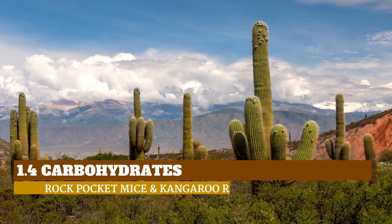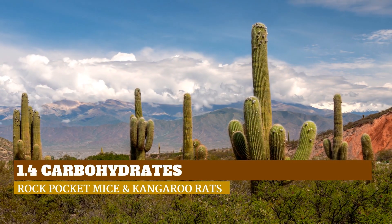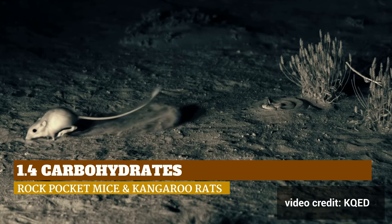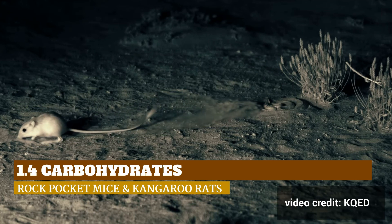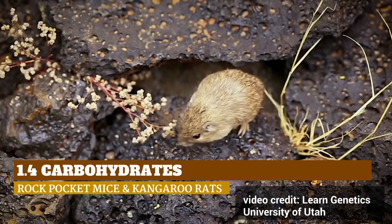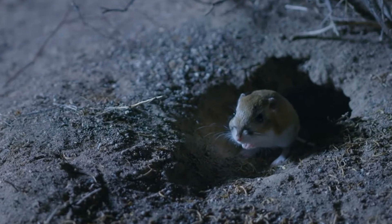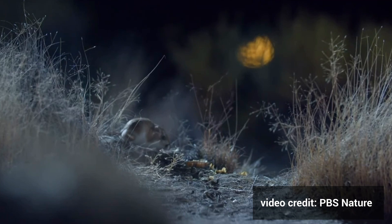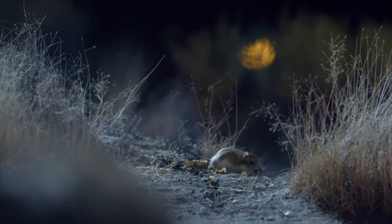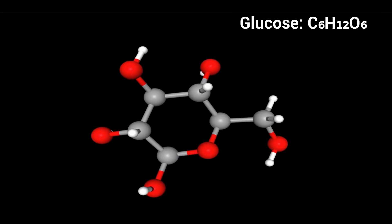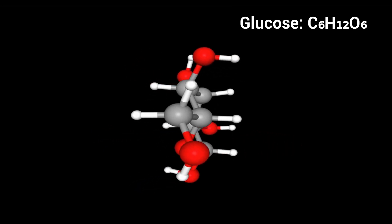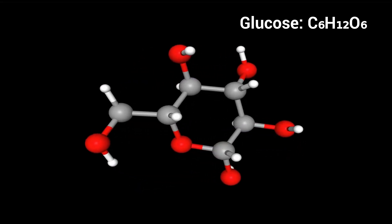Survival in the desert is no easy task. Both rock pocket mice and kangaroo rats need a consistent supply of energy to avoid predators, forage for food, and maintain body functions. But where do they get the energy? The answer lies in the carbohydrate-rich seeds the animals eat as the main part of their diet. Carbohydrates are essential macromolecules that store and provide energy for all living organisms.